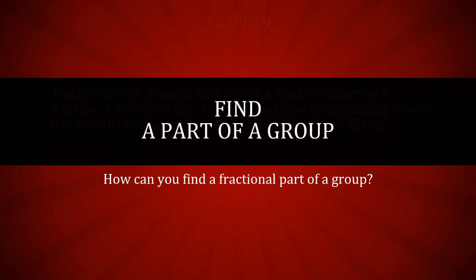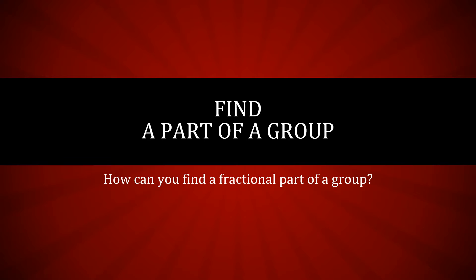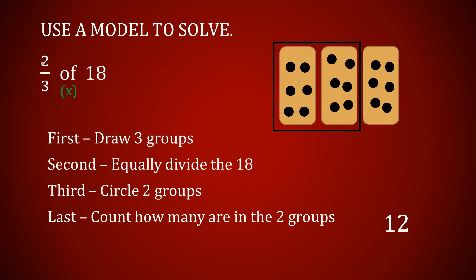So what we are doing today is finding a part of a group. We are going to be multiplying a fraction by a whole number, and that means finding a part of a group. Look at this model here. The question I'm asking is: what is two-thirds of 18? When you see the word 'of' in a mathematical sentence like 'two-thirds of 18,' it is like saying two-thirds times 18.